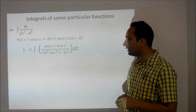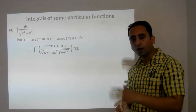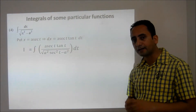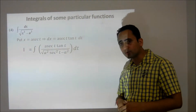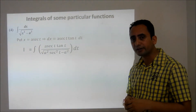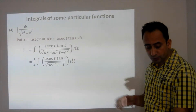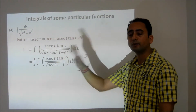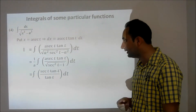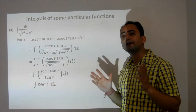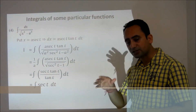We simplify the integral by taking a squared common under the square root. When a comes out of the square root, it cancels with the a in the numerator. Inside the square root, secant squared t minus 1 equals tan squared t, so after the square root we are left with tan t. This simplifies the whole expression to just the integral of secant t. We know that the integral of secant t is log of secant t plus tan t, plus a constant.